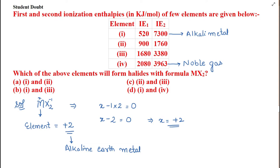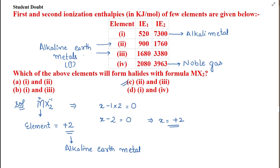Now only two options are left. The second and third elements may be alkaline earth metals, since they have two valence electrons. When they lose these two electrons they acquire noble gas configuration, and then their ionization enthalpies become very high. The difference between the two ionization enthalpies for both element two and element three is not very large, confirming they are alkaline earth metals. So the correct answer is C — elements two and three.